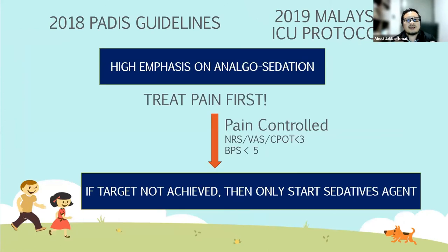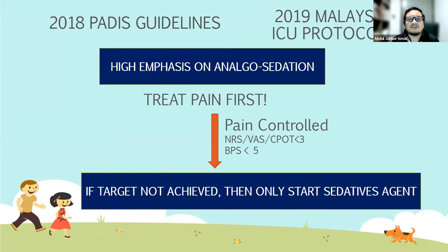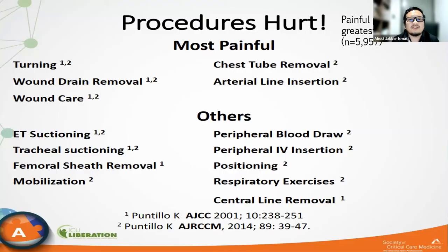Both the 2018 PADIS guideline and the Malaysian protocol emphasize analgo-sedation: treat pain first. Only when pain is controlled — when NRS, VAS, CPOT, or VPS scores are less than five — and if the target RASS is still not achieved, then start a sedative agent. ICU and critical care has been shown to be very painful. Studies by Puntillo showed the five most painful ICU procedures are: turning, wound drain removal, wound care, chest tube removal, and arterial line insertion. Turning is actually more painful than arterial line insertion.